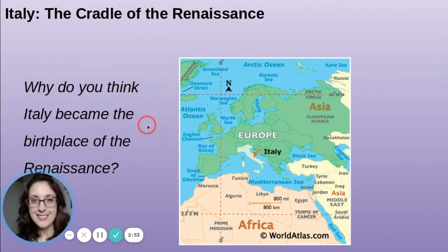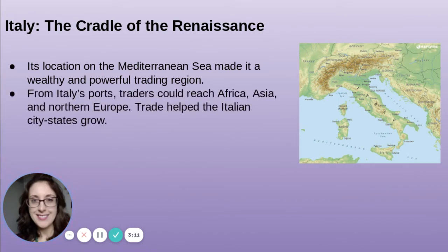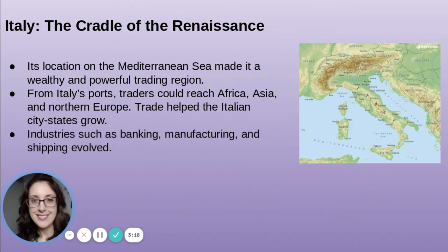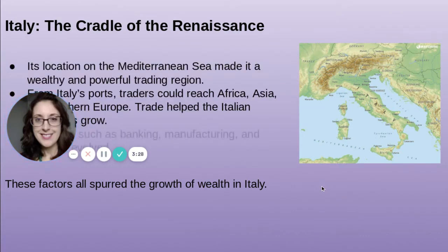Italy becomes the cradle of the Renaissance — or where it begins. Why do you think Italy became the birthplace of the Renaissance? Italy's location on the Mediterranean Sea made it a wealthy and powerful trading region. From Italy's ports, traders could reach Africa, Asia, and northern Europe. Trade helped the Italian city-states grow, and industries such as banking, manufacturing, and shipping evolved, spurring the growth and wealth of Italy.